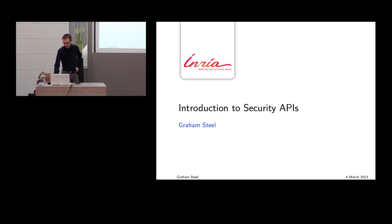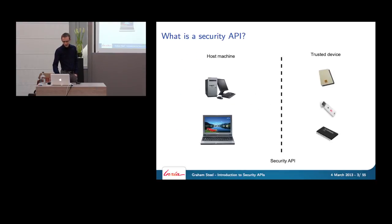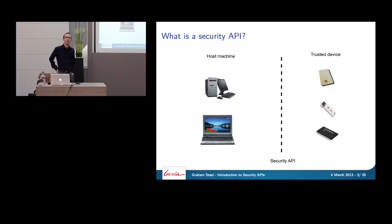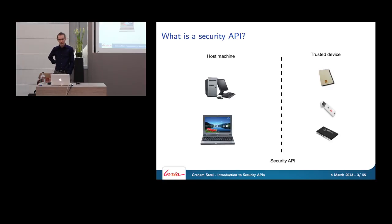So what is a security API? We like to think of it as an API that divides the world into two halves — a half that we trust and a half that we don't trust at all. It's a way of looking at the architecture of a complex system that's supposed to have security properties, allowing us to do analysis and design for defense in depth. It's a very useful abstraction.